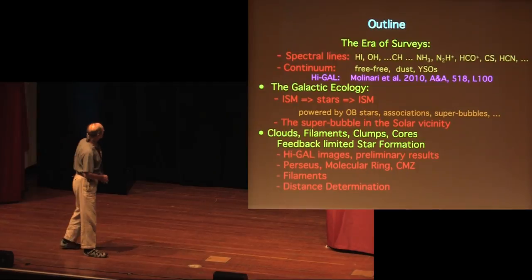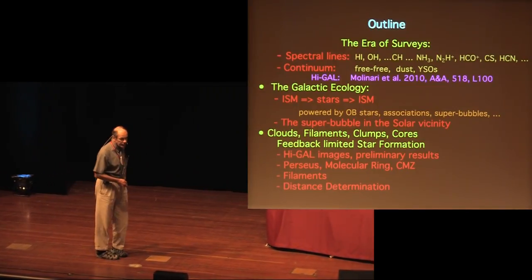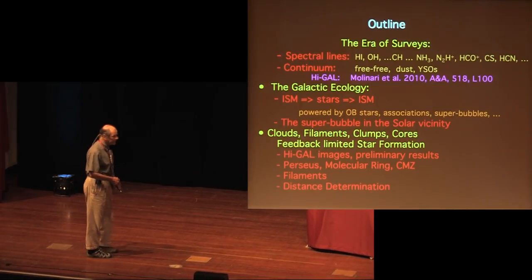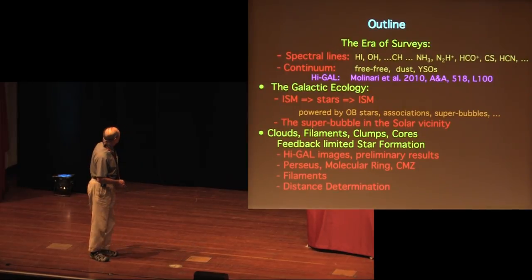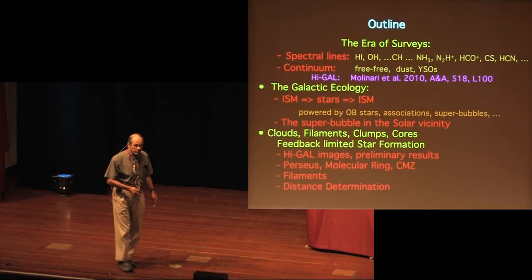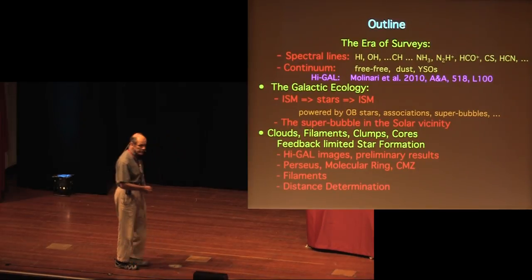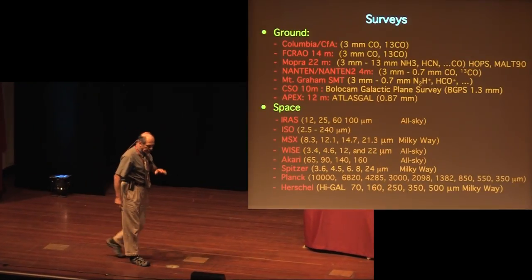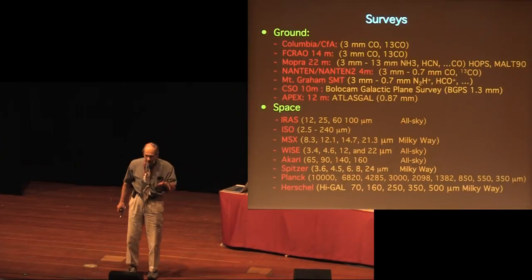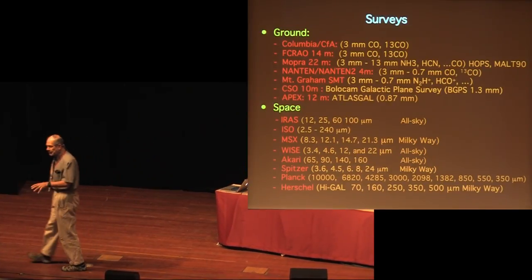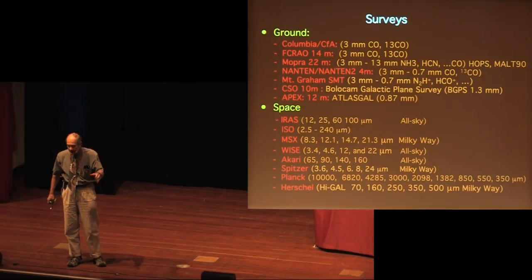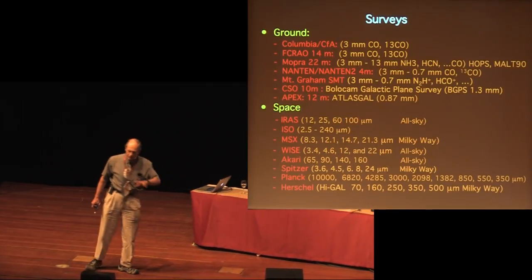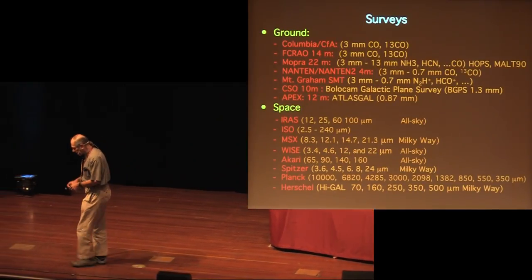I'll concentrate on some of the recent surveys, specifically the Herschel galactic plane survey known as HiGAL, and we'll talk about clouds, clumps, and filaments. This is the era of surveys. If you look back over the last 60 years, in this discipline we started out by discovering molecular transitions in the millimeter part of the spectrum with heterodyne observations. Up until about the 1990s, most of our surveys of the galaxy were done with heterodyne instruments—CO surveys, various other lines, H1 surveys.